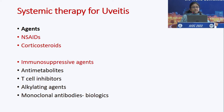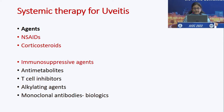The systemic medications available for managing uveitis include NSAIDs, corticosteroids, and immunosuppressive agents — which encompass several groups: anti-metabolites, T-cell inhibitors, alkylating agents, and monoclonal antibodies commonly known as biologics.